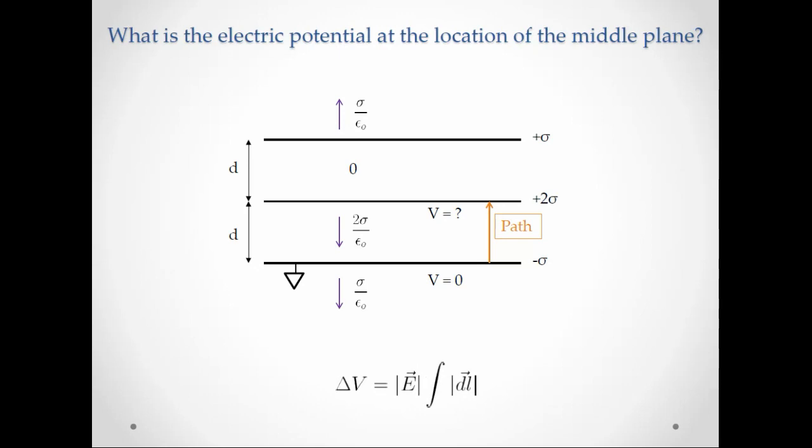And so we're left with the path integral of DL, which just simplifies to d, since that is the distance between the plates. And so the change in voltage is Ed, meaning that the voltage of the middle plate is just equal to the voltage of the bottom plate plus the change in voltage, or two sigma d divided by epsilon naught.